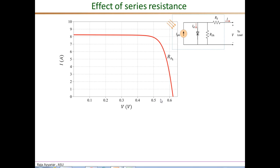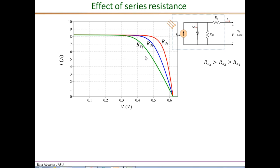The next parameter we will consider is the series resistance and its impact on the current-voltage characteristic. The plot shown here corresponds to the nominal value of the series resistance for this particular PV module, which is 5 milliohms per cell estimated from the datasheet. If I increase the series resistance to a new value RS2, which is higher than the original RS1, then the IV characteristics change to the blue curve. If I increase the resistance further, we get the green curve.